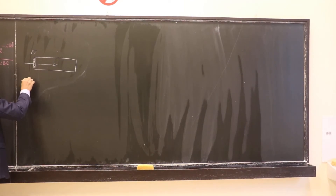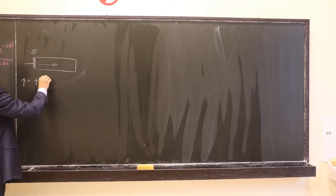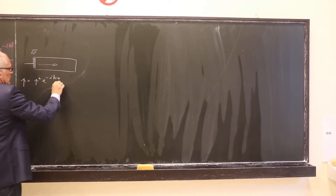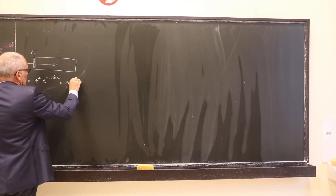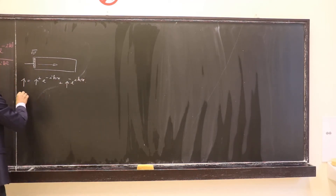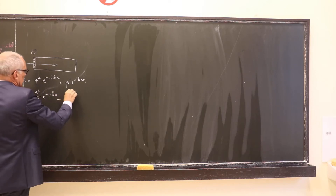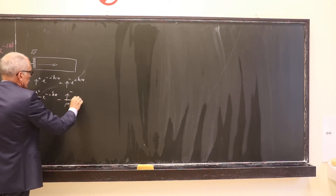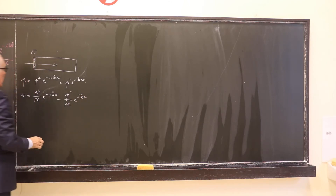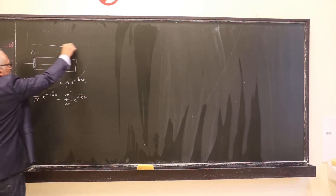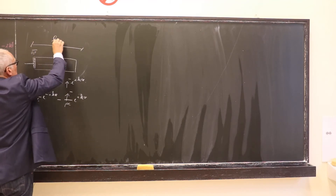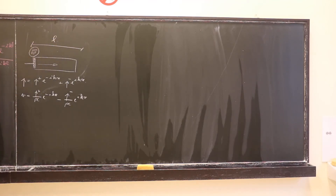We have the usual expression for the pressure field in the duct, and for the velocity: p+ over ρc times exponential minus ikx, minus p- over ρc times exponential plus ikx. The only thing we know about the duct is its length l and the velocity of the piston — the oscillation velocity of the piston. How can we find the values of p+ and p-?